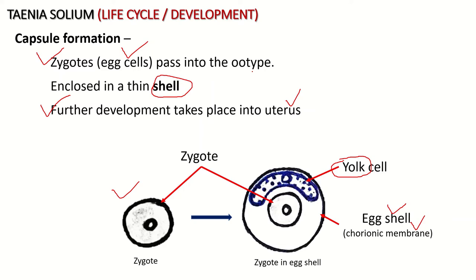The sperms and ova meet in the fertilization duct where zygote formation takes place, and afterward development continues in the uterus. Around the zygote, a covering envelope called the egg shell or chorionic membrane is formed due to the deteriorating role of yolk material.